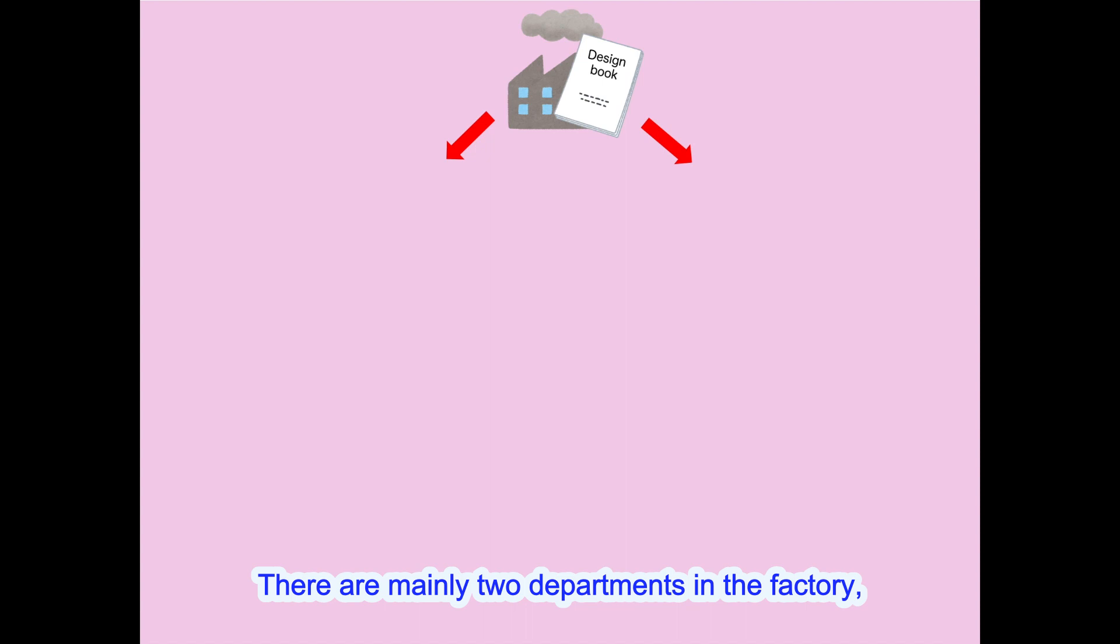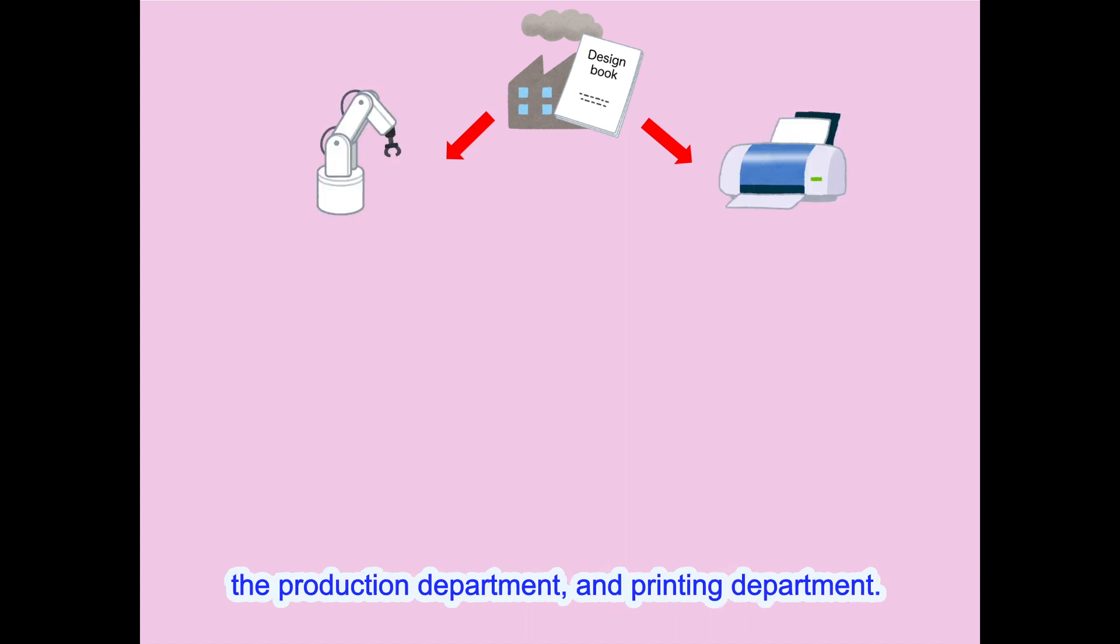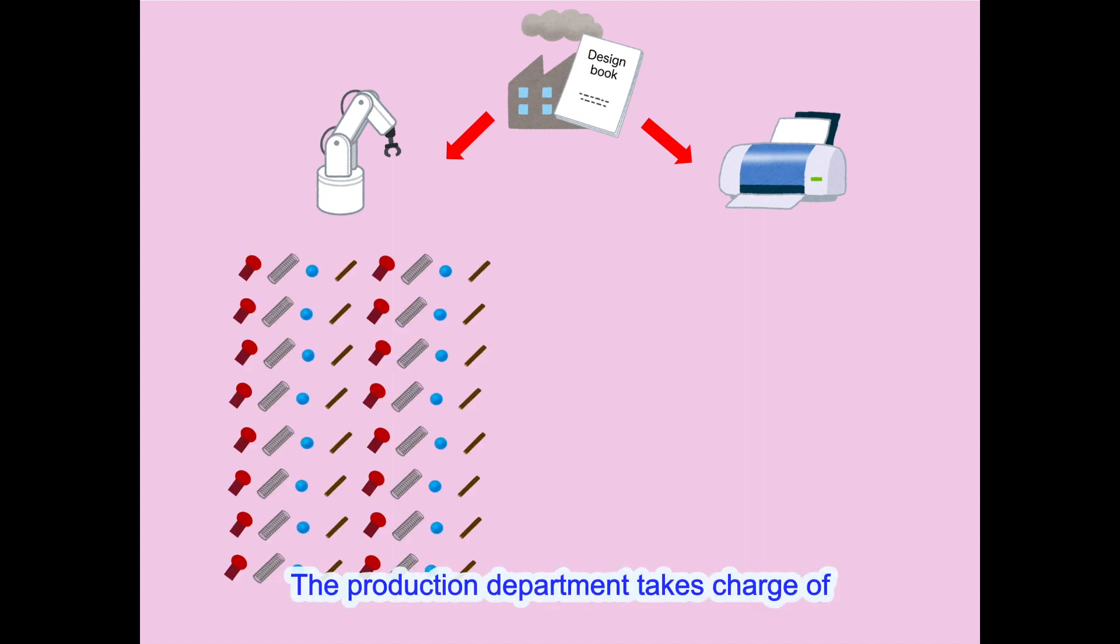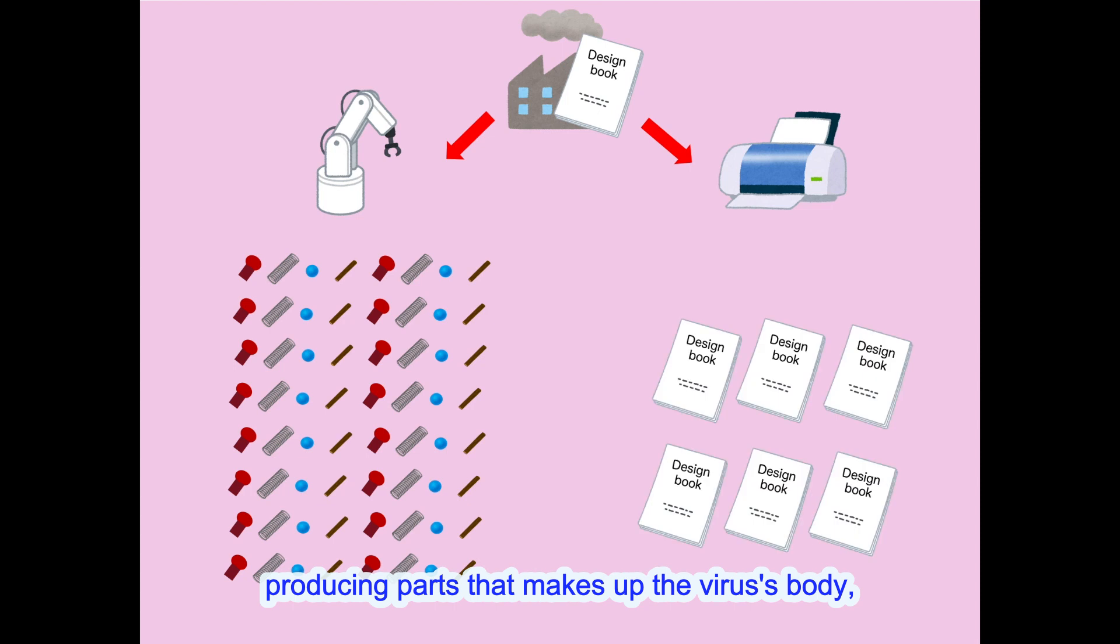There are mainly two departments in the factory: the production department and printing department. The production department takes charge of producing parts that make up the virus body, but the printing department is responsible for making copies of the virus design book.